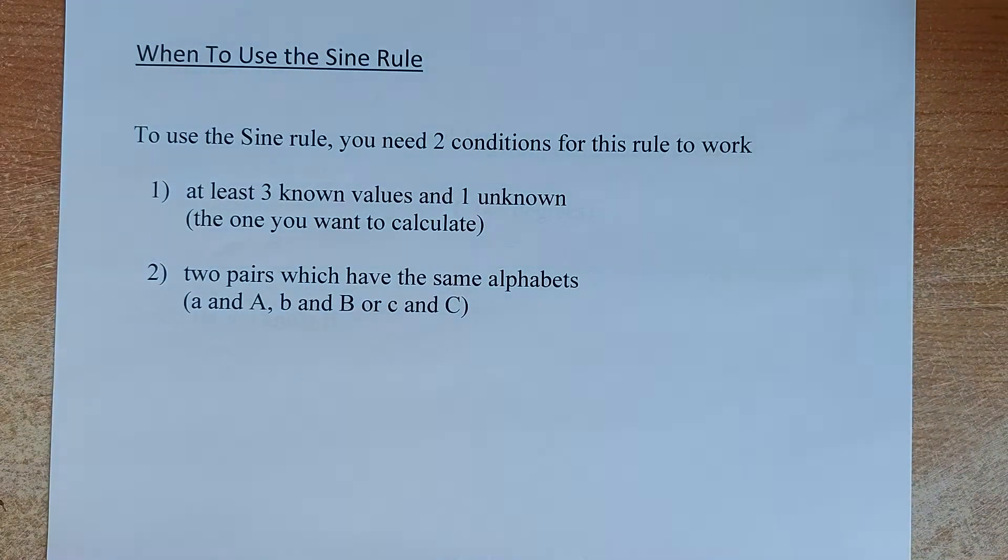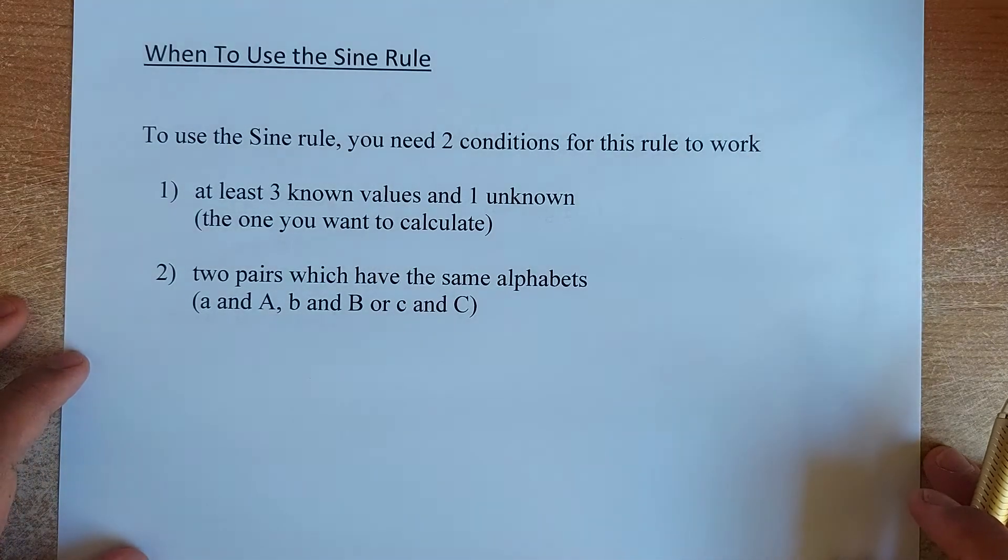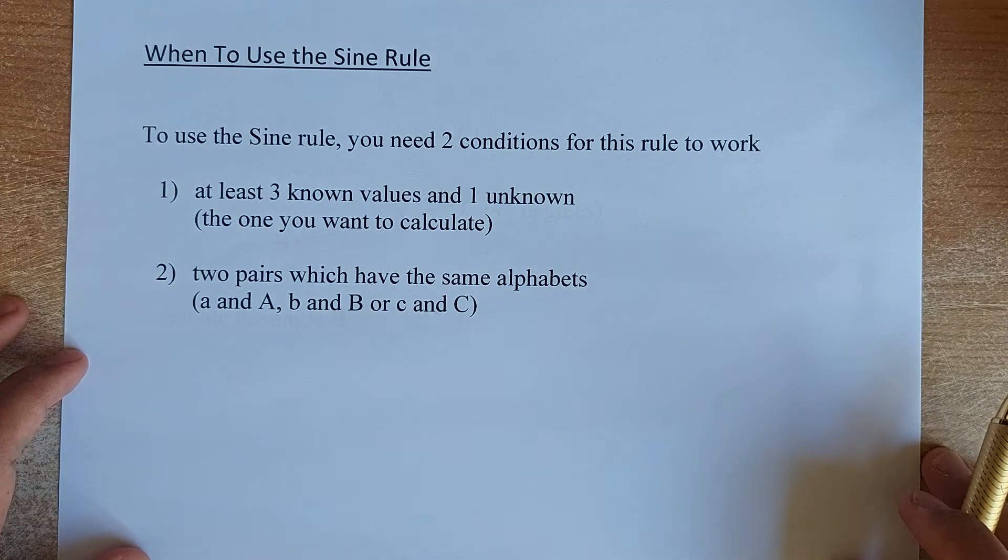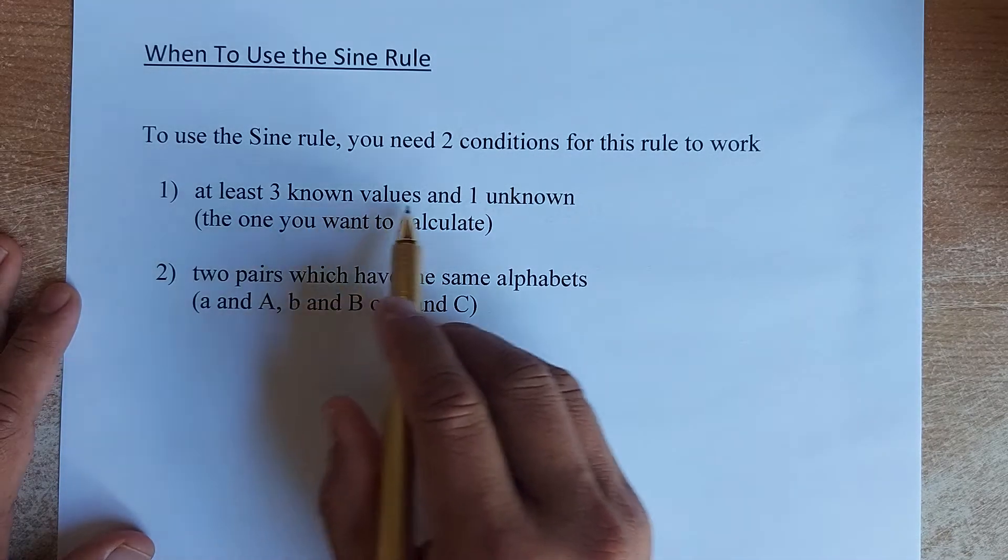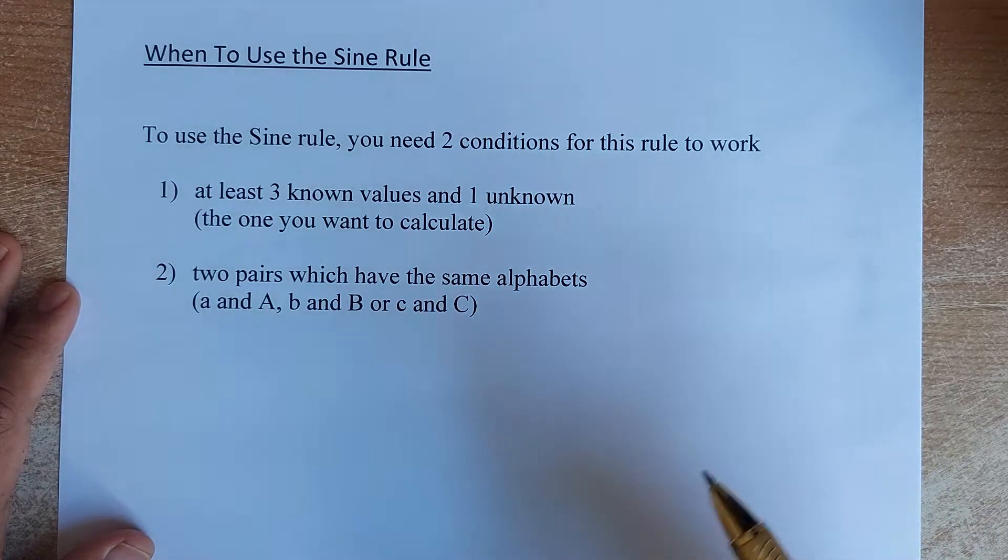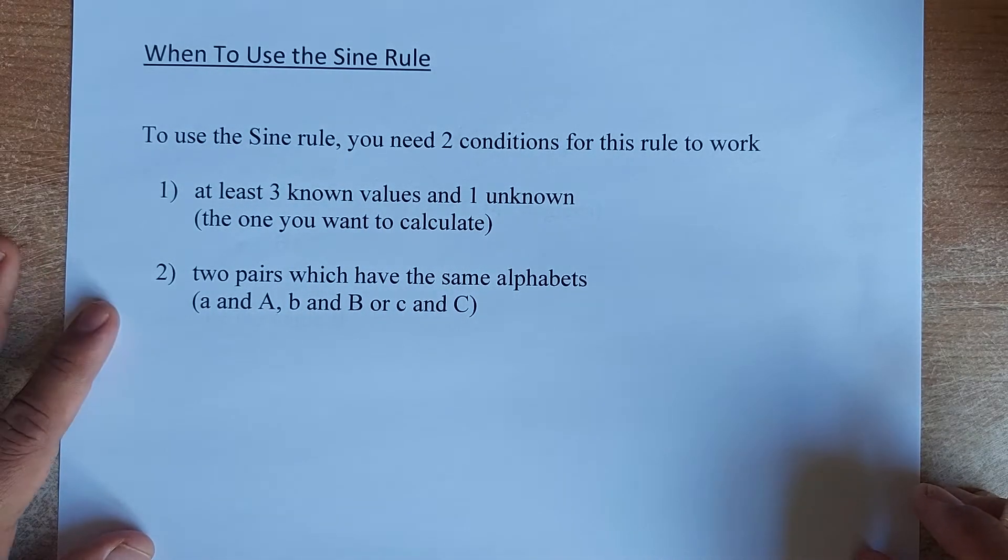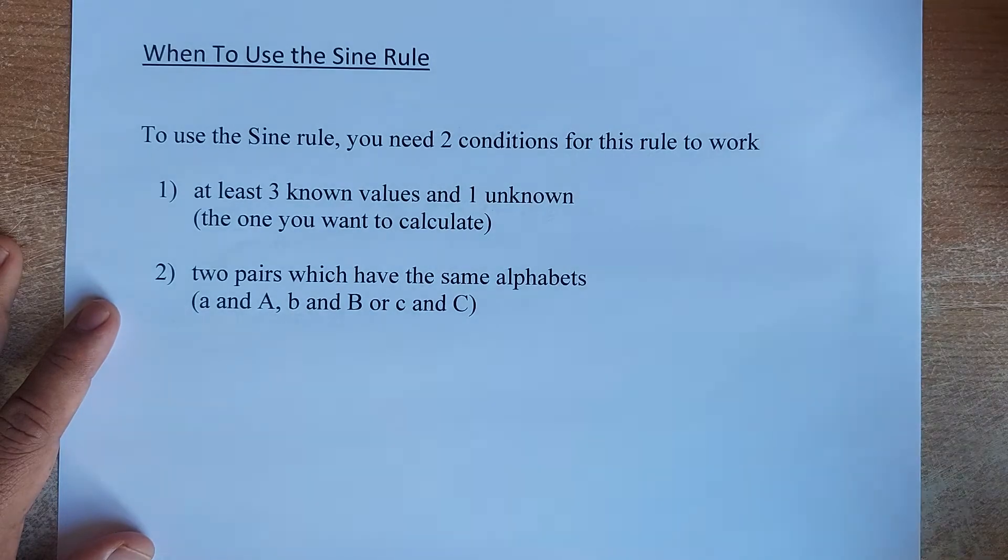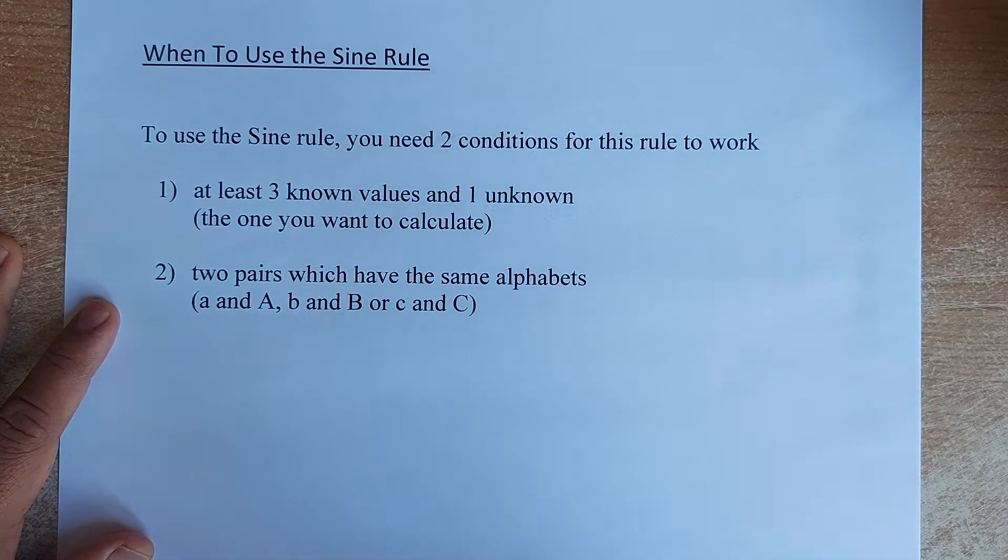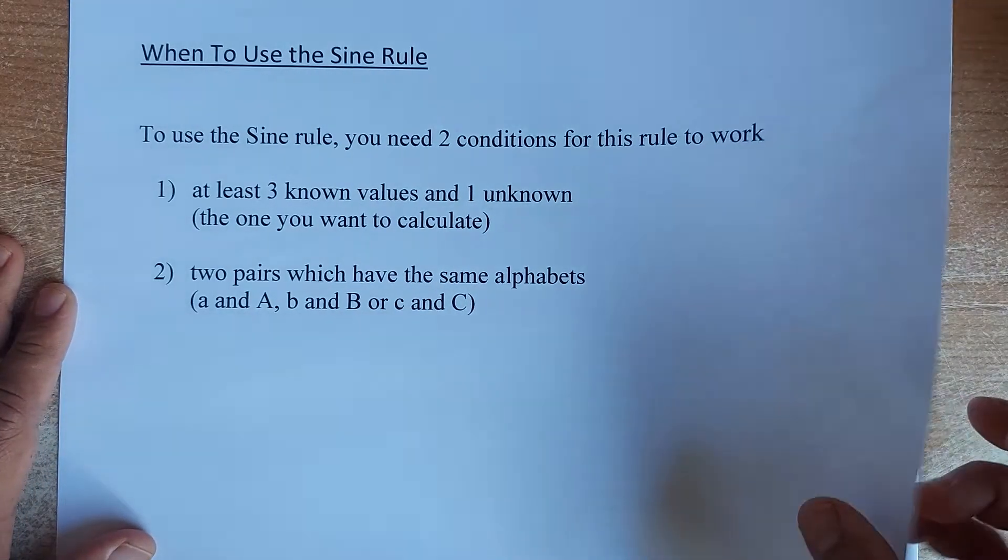We shall refresh when you use the sine rule. So for the sine rule to work, you have two conditions for this to work in the solving of an equation. First, you must have at least three known values and one of them will be an unknown. That's the unknown is what they asked you to calculate. And the last thing you need to know is that they must have two pairs. Even though there are three pairs, A, B and C or X, Y and Z, you only need two pairs for the sine rule to work. So one of them can be omitted.